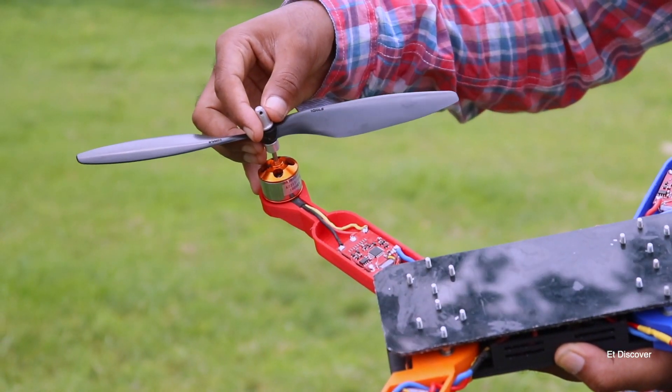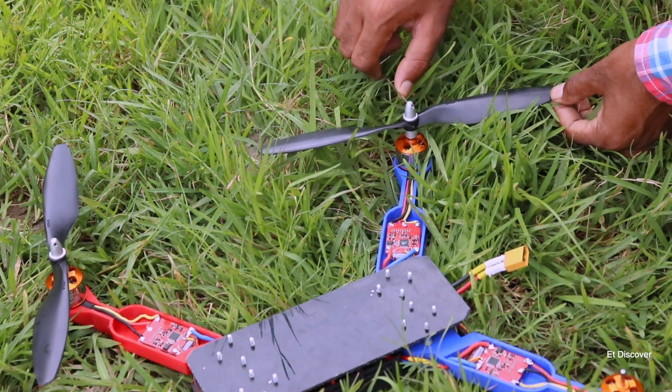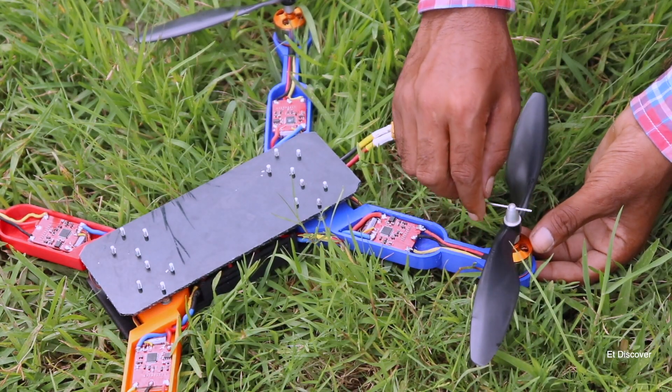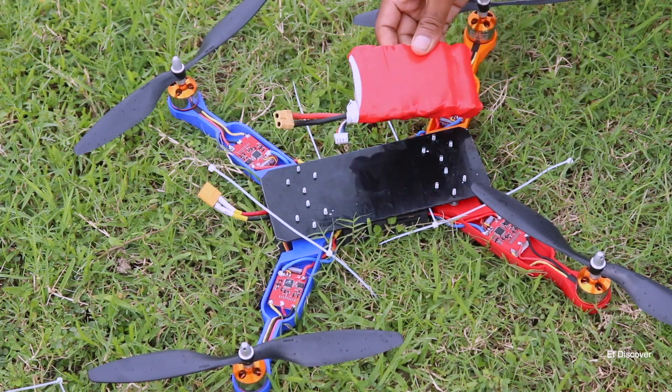Next I will mount all the propellers on the top of the motor. And here I am going to use 1045 propellers here. Of which two are counter clockwise, another two are clockwise. Look you can see our propellers are installed.